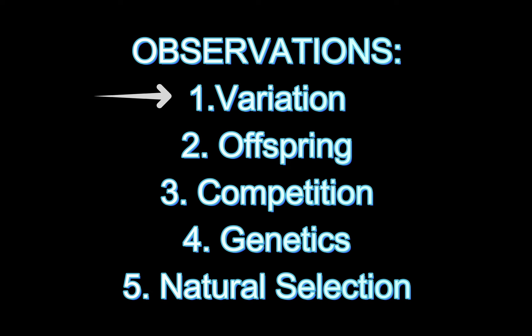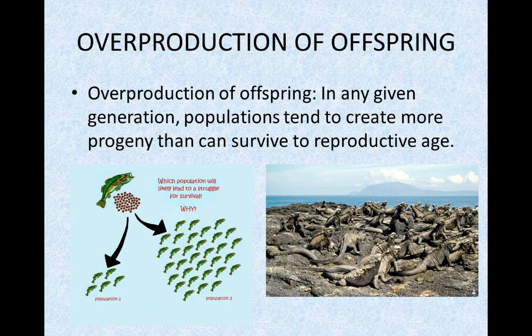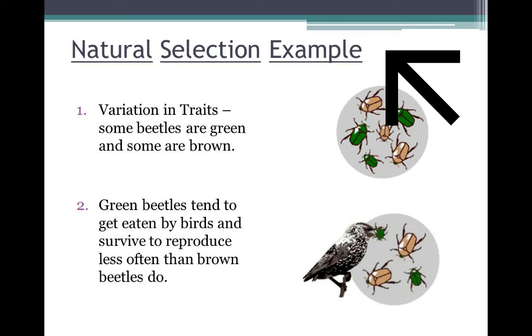Darwin's theory on natural selection is based on the following observations: one — variation; two — offspring; three — competition; four — genetics; and five — natural selection. He explained that organisms produce a large number of offspring, and within those offspring there is a great deal of variation or differences.